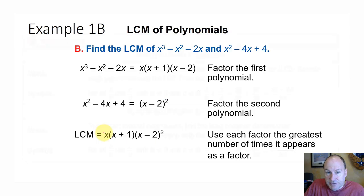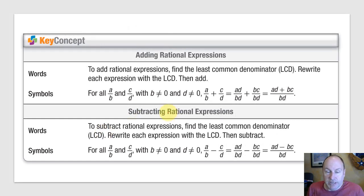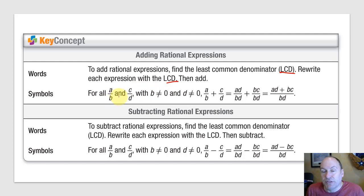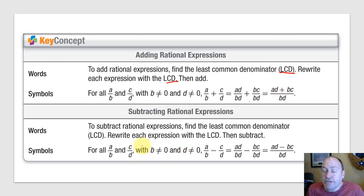The reason we do this is when we're adding and subtracting rational expressions, we need to find that least common denominator. To add rational expressions, we find the least common denominator and rewrite each expression with it. So a over b plus c over d equals a times d plus b times c, all over bd. Subtraction works the same way — it becomes ad minus bc over bd.